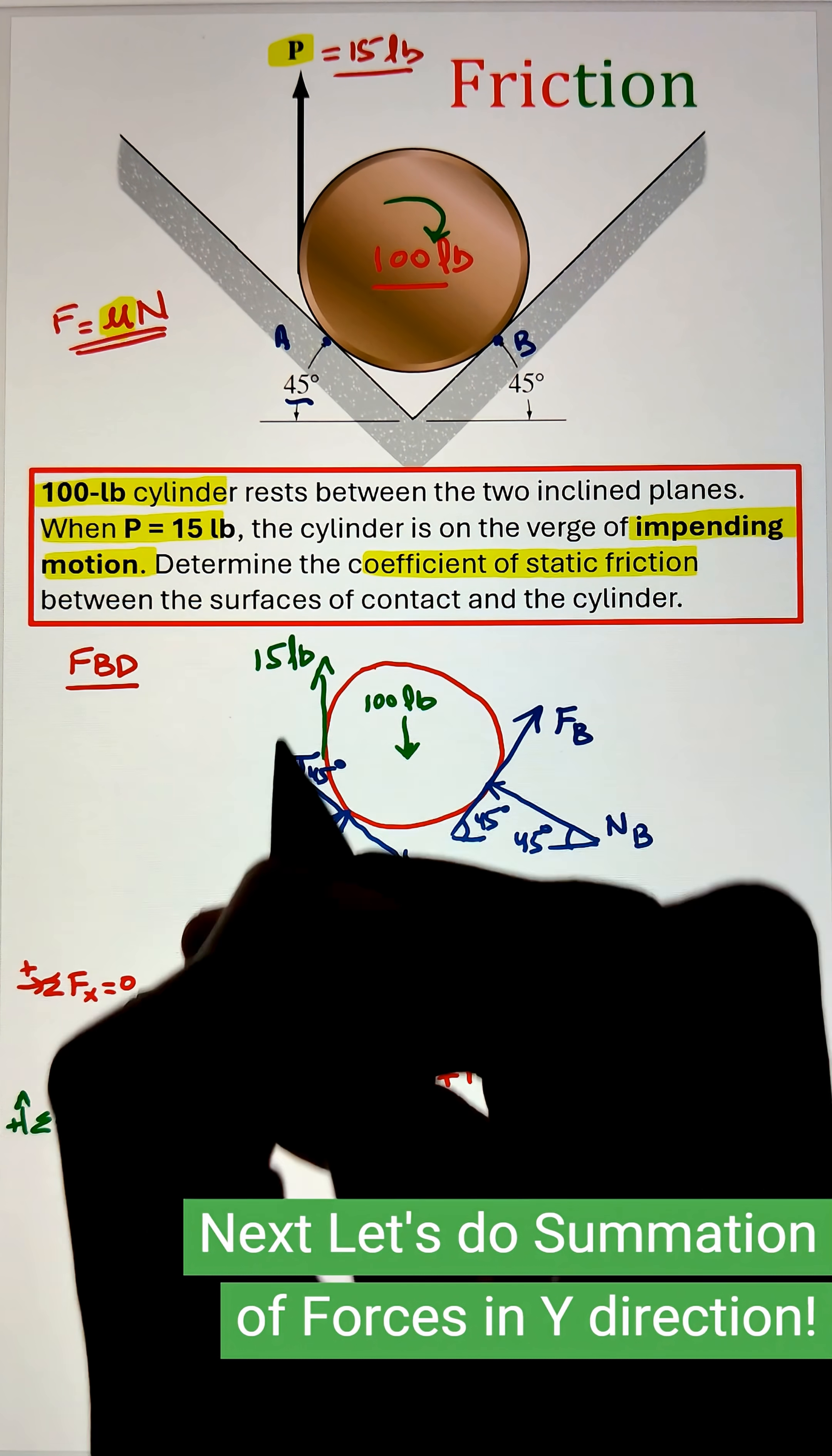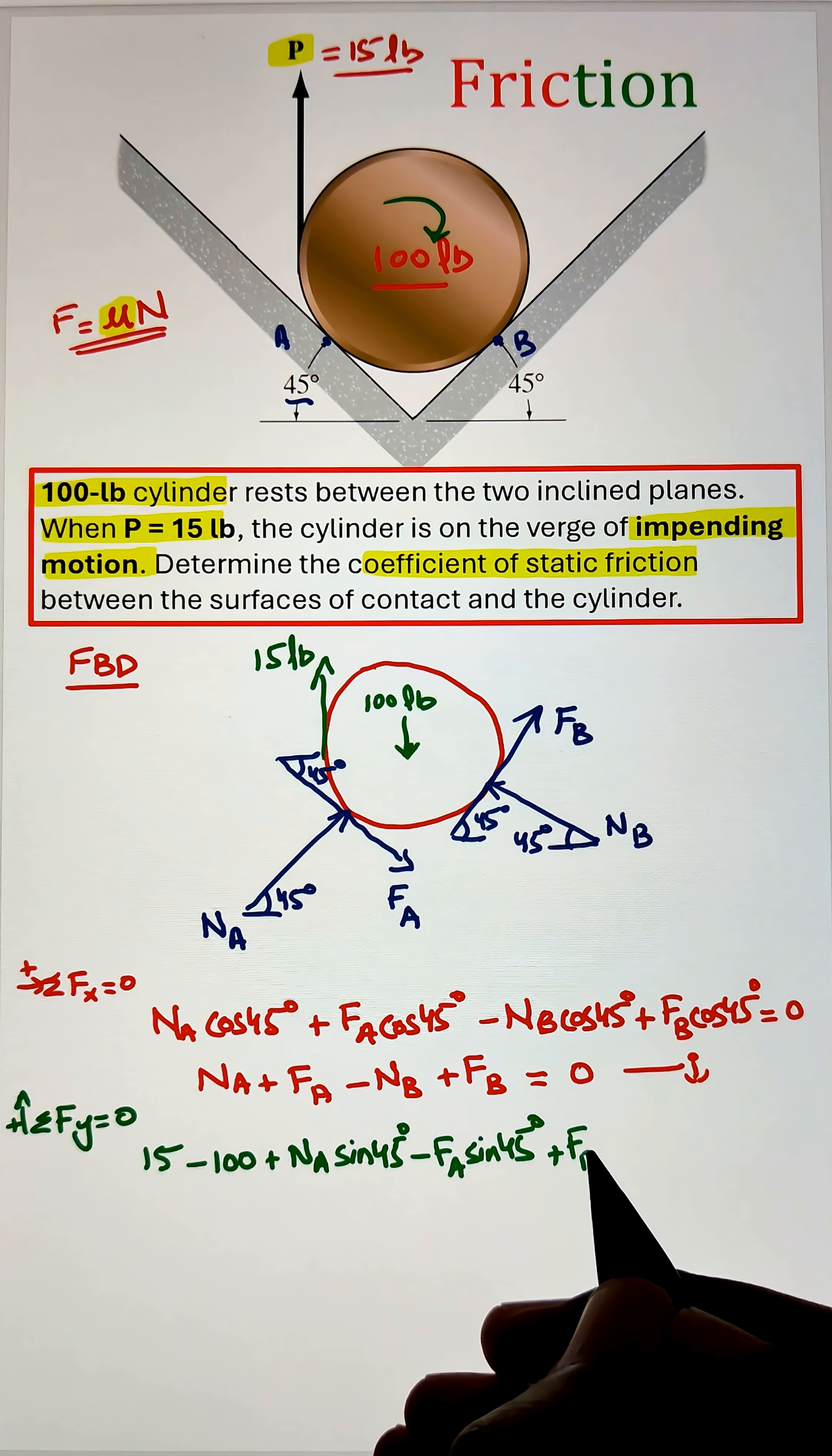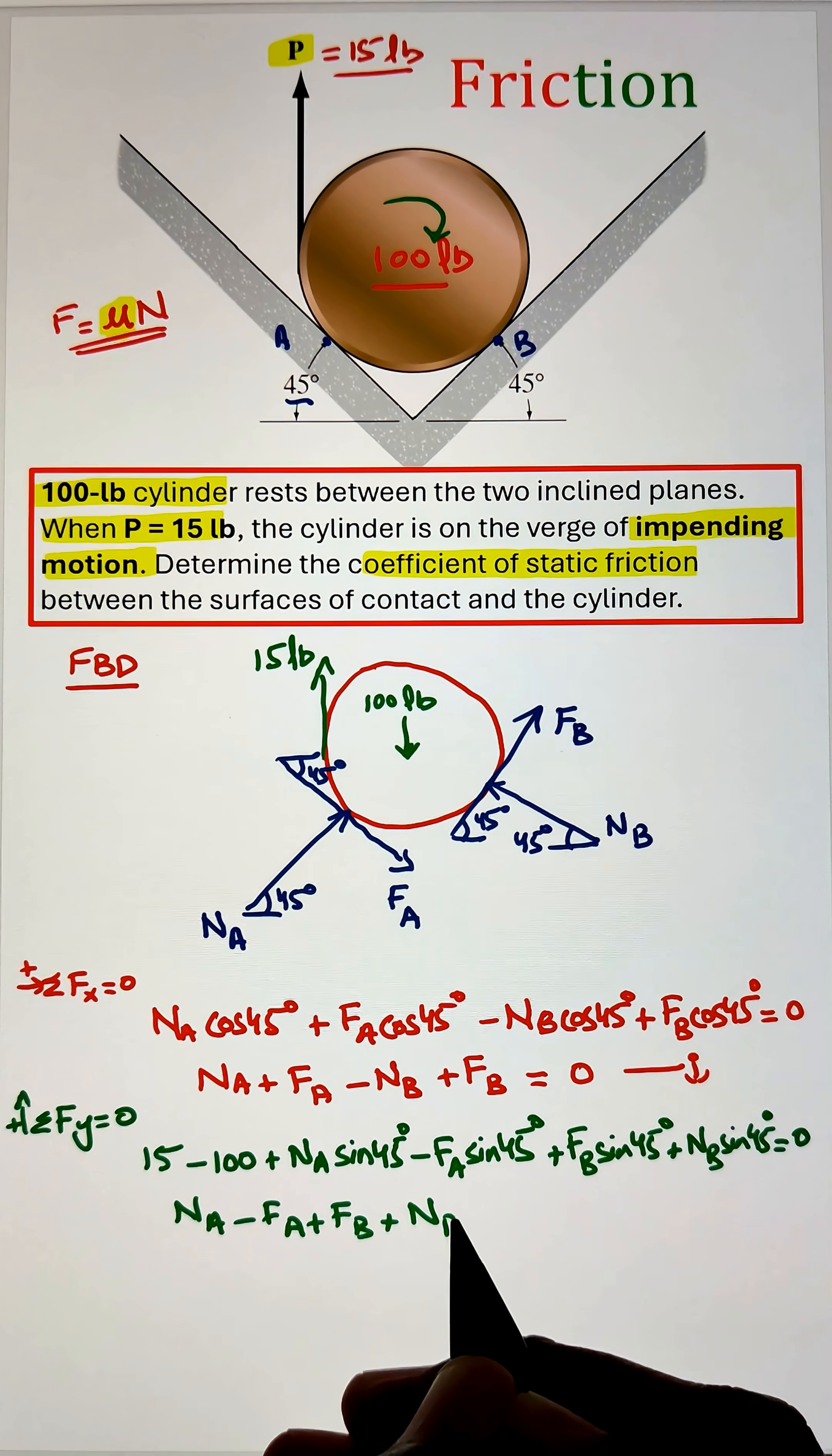Next we can apply our summation of forces in the vertical y direction equals to zero and add all the vertical components of the frictional force and the normal component. In addition I have an external load of 15 pounds going upward and a weight of the cylinder going downward. Simplifying we get our second equation as N A minus F A plus F B plus N B equals to 115.